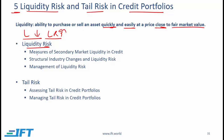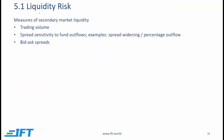In this segment we look at measures of secondary market liquidity, structural industry changes and the impact of these changes on liquidity risk, and we'll briefly discuss the management of liquidity risk. Then we'll move on to tail risk, discussing how to assess and manage tail risk in credit portfolios. The first major point is that corporate bonds tend to have lower liquidity than sovereign bonds, implying higher liquidity risk.